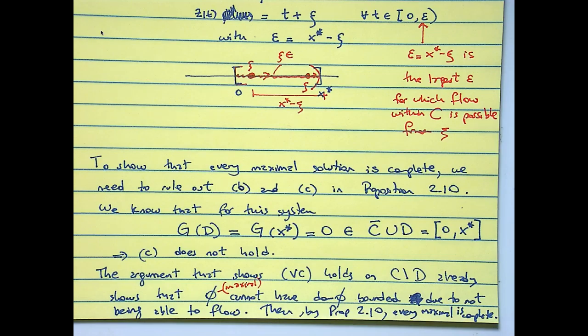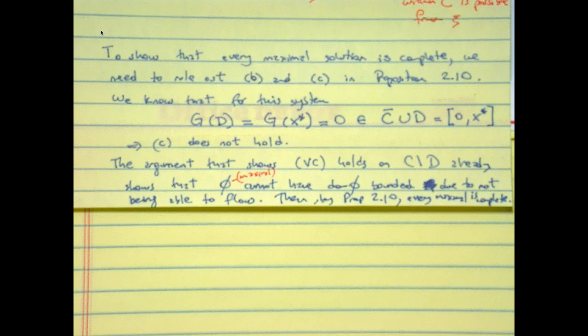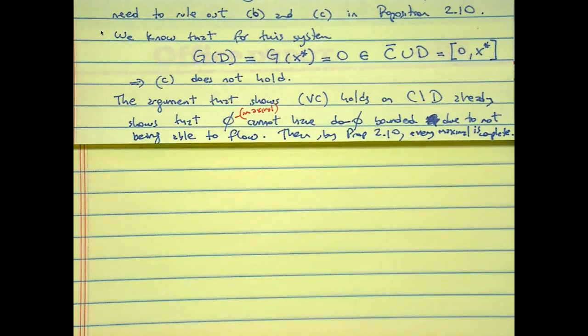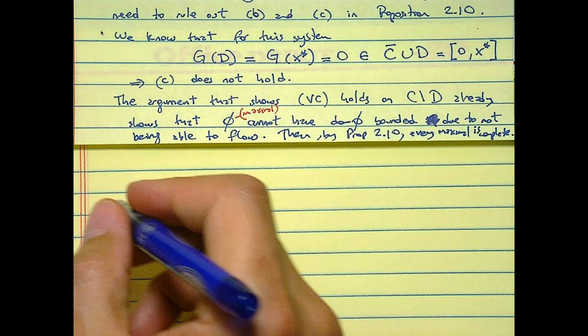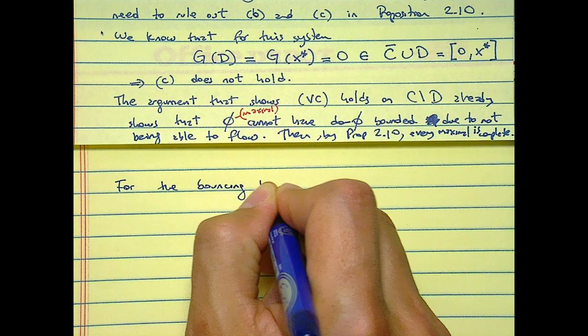Then by Proposition 2.10 every maximum is complete. Questions? So I definitely invite you to apply this proposition to this example again and think about it. What I'm going to do in less than five minutes is to outline how this will go for the bouncing ball.